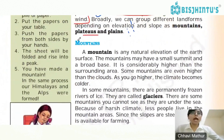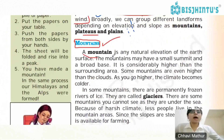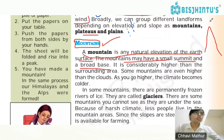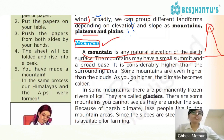Now we are coming to one of the major landforms, and that is mountains. A mountain is any natural elevation of the earth's surface. The mountains may have a small summit and a broad base — the summit, also called the peak of the mountain, is small while the base is broad.